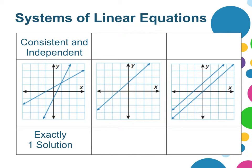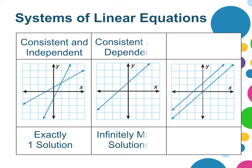In the second example, the one line is on top of another line, so these two lines are the same. They have infinitely many solutions, and we call this consistent and dependent.